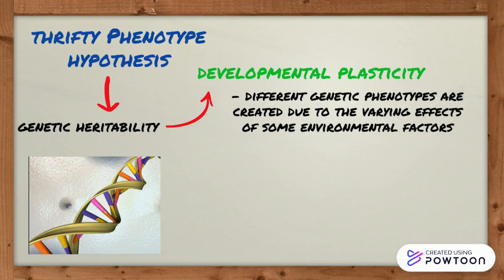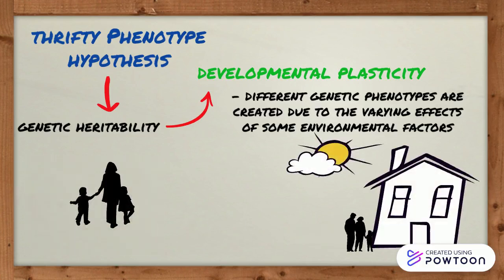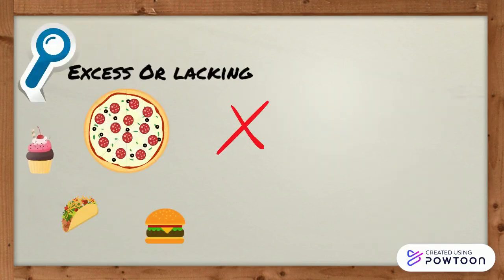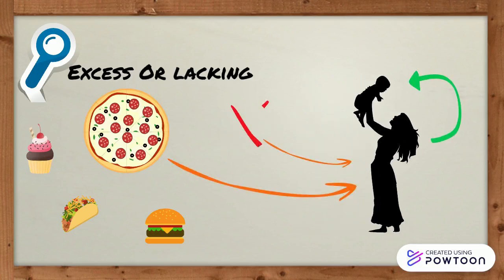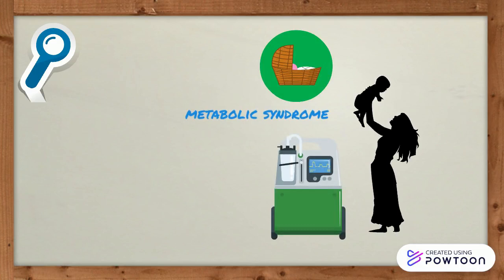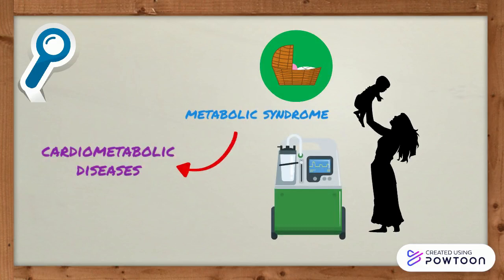In other words, the environment that you grow up in can directly impact your development from fetal stages all the way into early adulthood. Research determined that both an excess and a lack of food or nutrients in mothers have impact on fetal development, which contributes to children being born with metabolic syndrome and can lead to the development of cardiometabolic diseases.